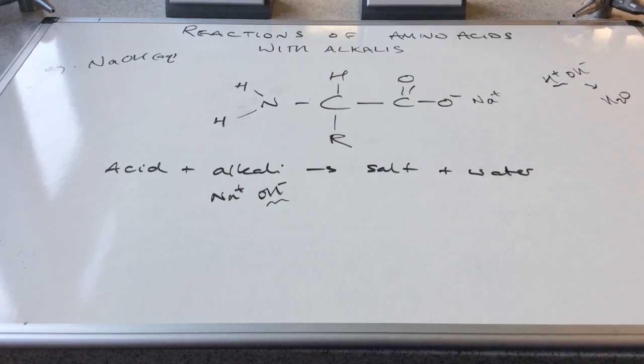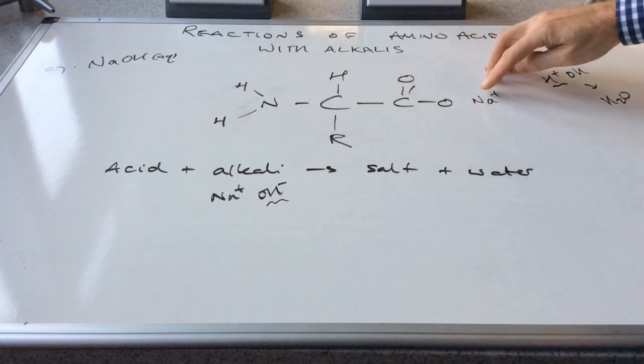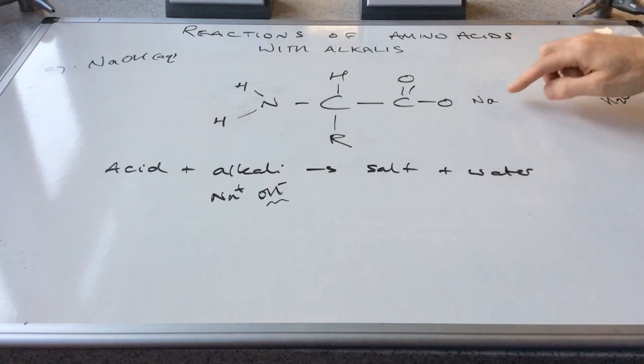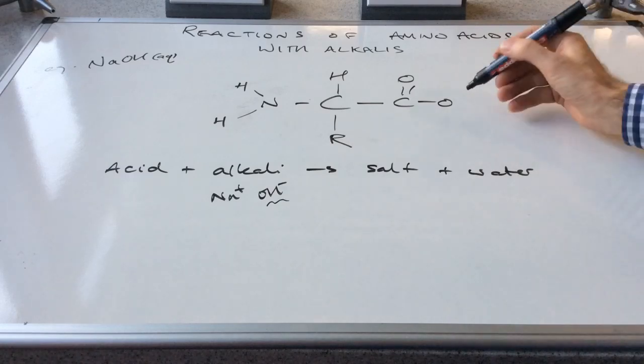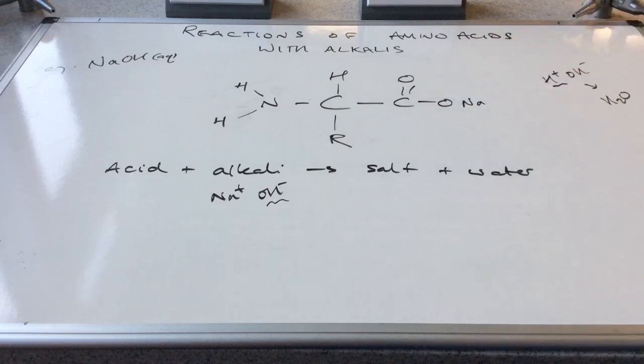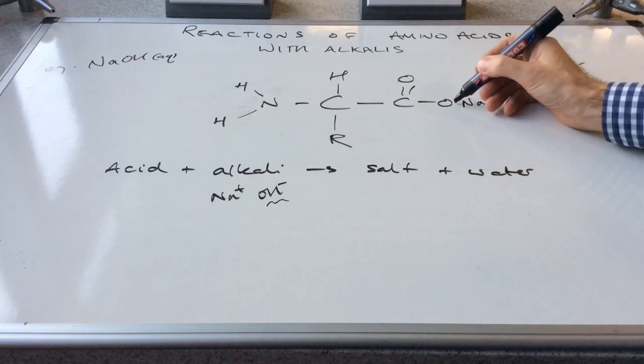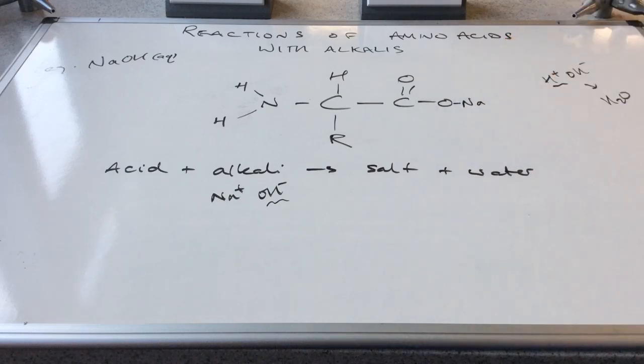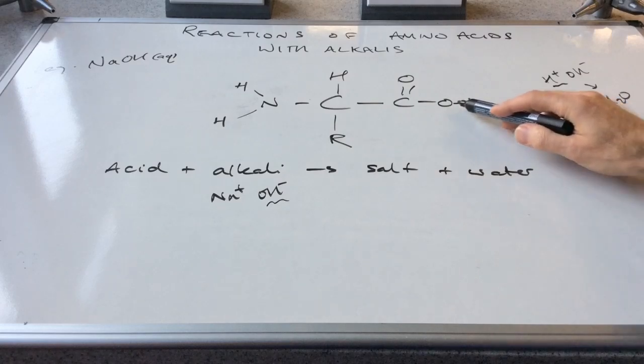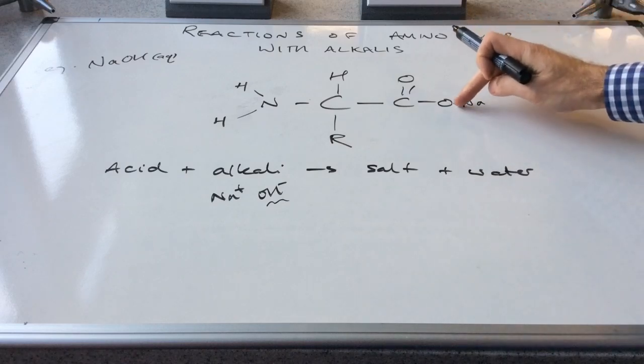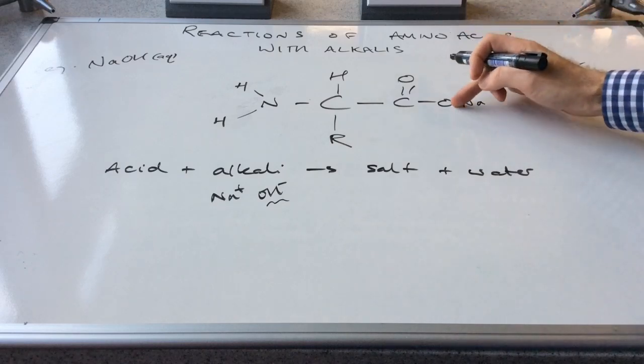Now you can see I'm showing the charges there on the negative and positive ions. You don't have to do that. So that would be fine as well. Just move that a bit closer. That would be okay. But what's not okay is if you connect them like that. Because what you're saying is the sodium and the oxygen are connected by a covalent bond. And that is not the case. So let's just correct that.